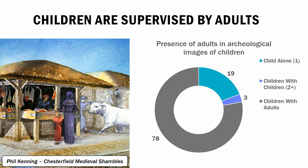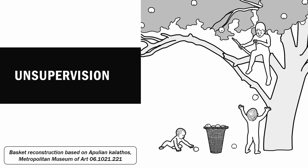This is especially visible in the presence of adults in archaeological images of children. In the majority of these images, children are pictured with adults, either supervised or accompanied. Children do appear alone, but interestingly when they do, they're often not doing anything — just standing passively, usually as a mannequin to model archaeological objects. In only three illustrations did we see children with other children without adults present, and interestingly these were all by the same author. So part of this project was an intentional effort to depict children unsupervised, to show their capacity to do things without adults present.